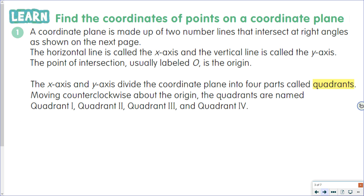This just reiterates a few of the things we just covered: two number lines intersect, the horizontal is called the X axis, the vertical is called the Y axis, the point of intersection is the origin, and then the four quadrants which are quadrants 1, 2, 3, and 4.